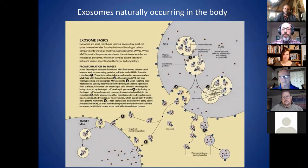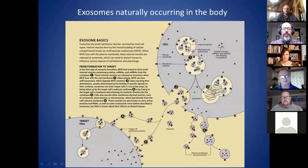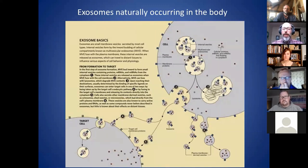This is a specific type of vesicle that will end up merging with the cell membrane at the surface under certain conditions and release these exosomes out into the extracellular fluid, where they get into the circulation and are distributed around the body. While they're inside the cell, they're called MVEs — multi-vesicular endosomes — which contain a bunch of exosomes inside them. There are many things that can induce this process, accelerate it, and increase the number of exosomes released outside of the cell.